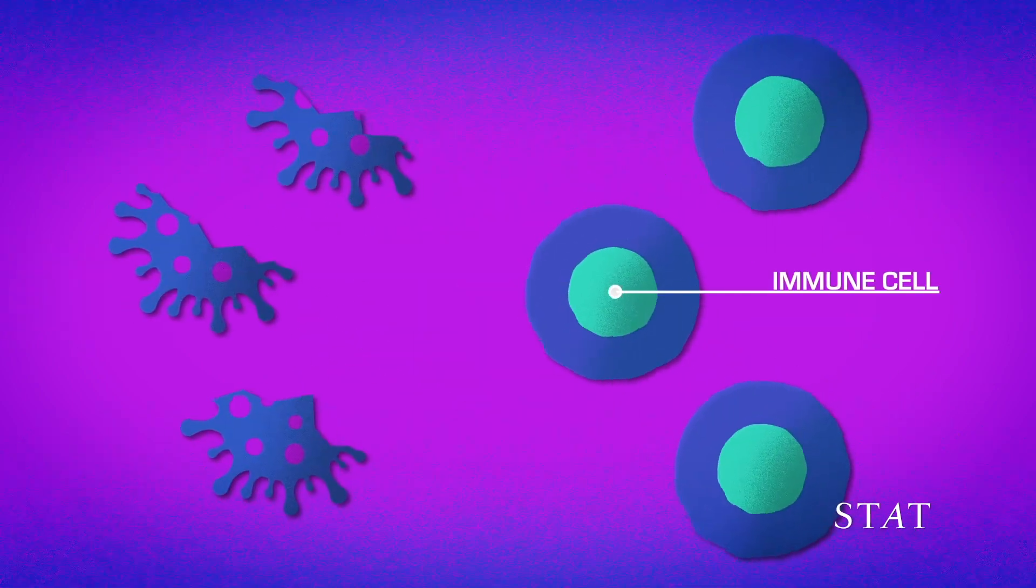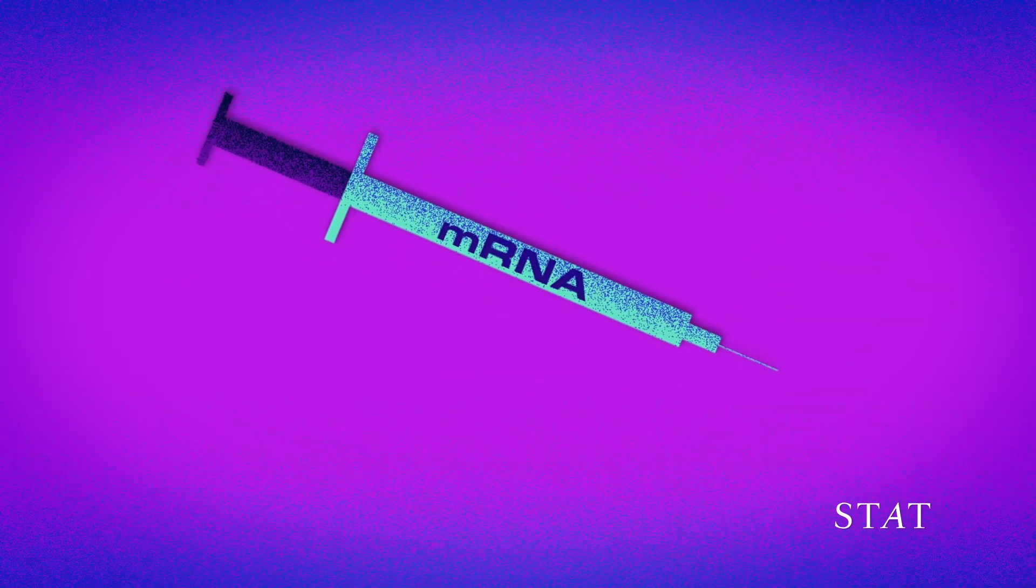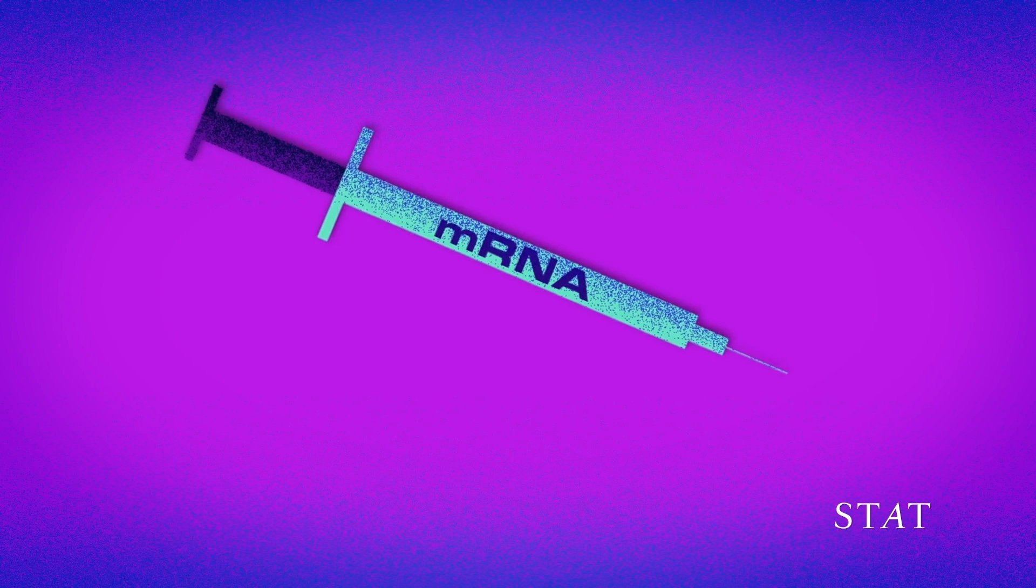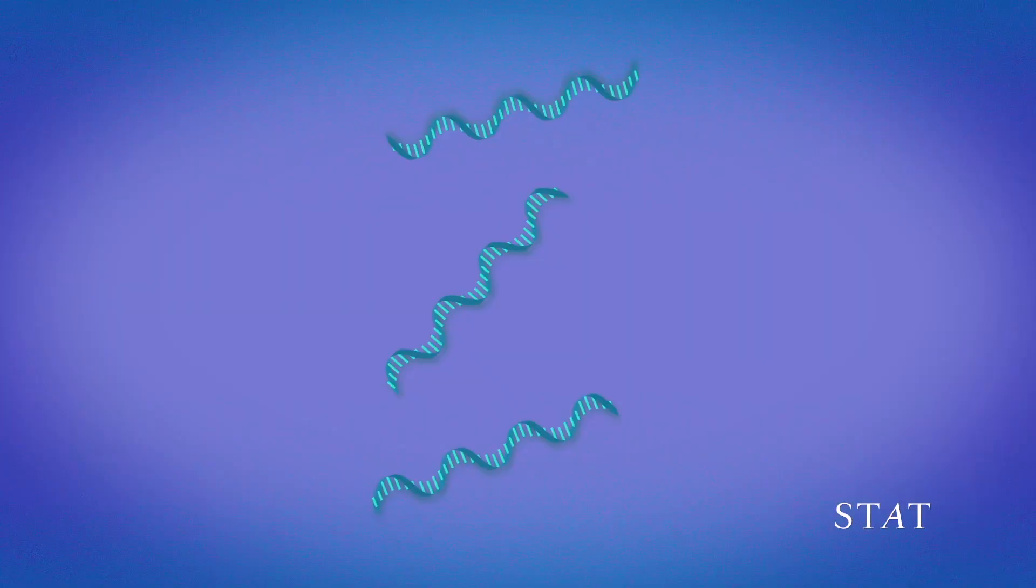The mRNA vaccines for COVID-19 work differently. Instead of using actual viral material, they inject the genetic instructions, called mRNA, that instruct human cells to make the antigen.